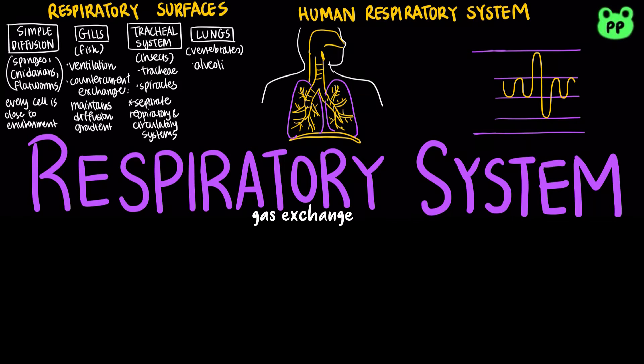In humans, air is inhaled through the nostrils into the nasal cavity. The air then travels to the pharynx, which is an upper area of the throat common to both the respiratory and digestive systems. The air then travels to the larynx, also known as the voice box, which consists of an elastic band of muscle that vibrates to produce sounds.